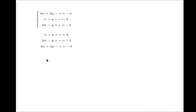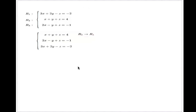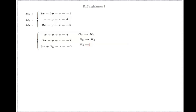The remaining equation will be the third one. This type of operation, we call it a row swap. So if I call this the first row, this the second row, and this the third row — what happened here is that we took the second row and put it in the first position, we took the third row and put it into the second position, and we took row number one and put it in the third position.